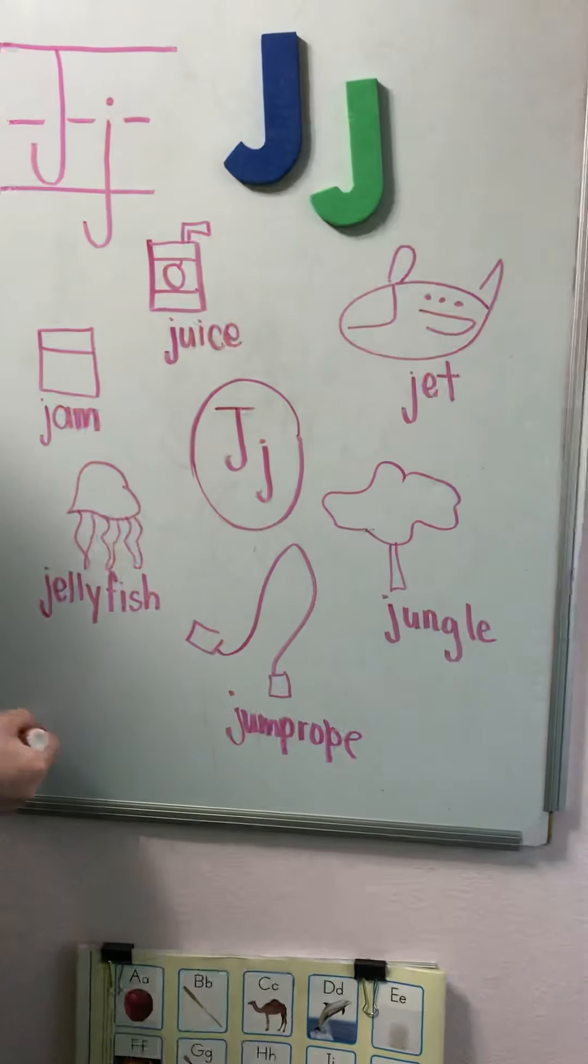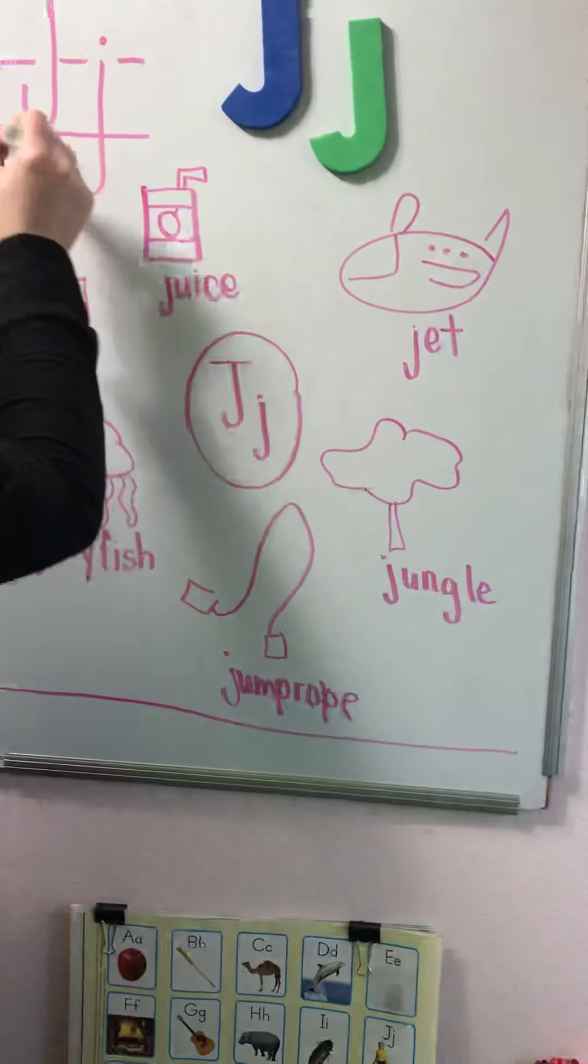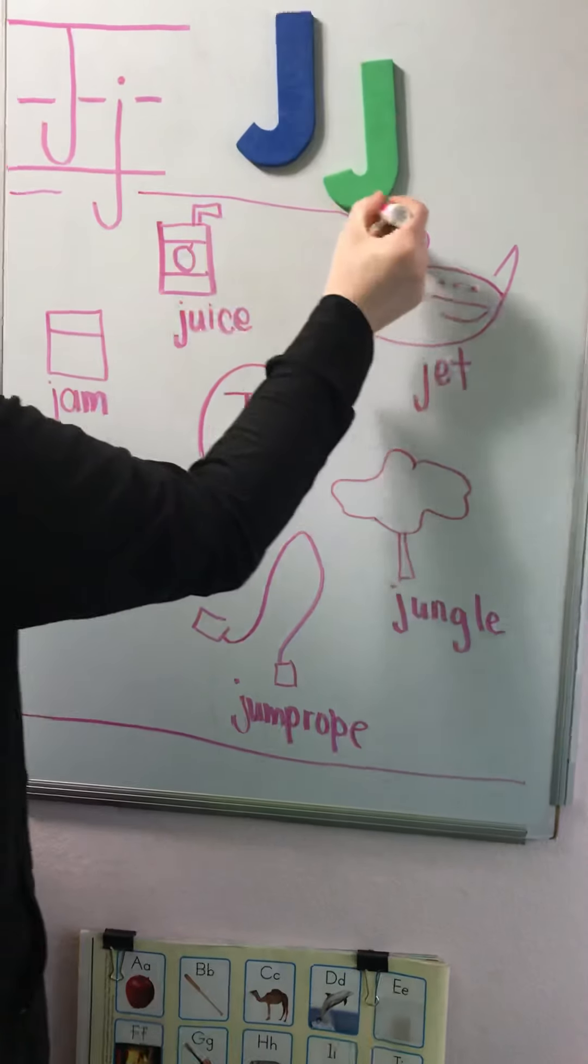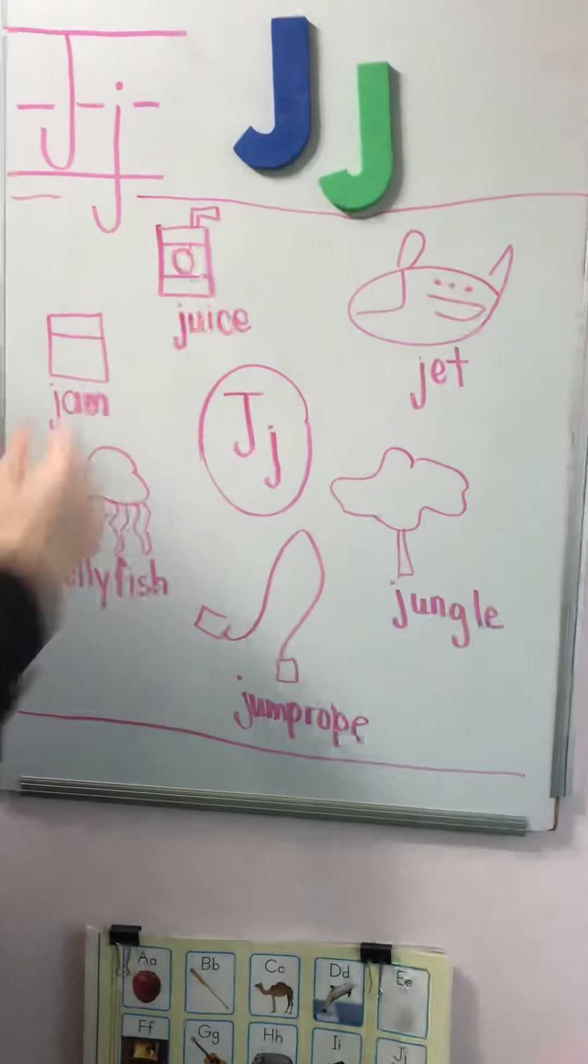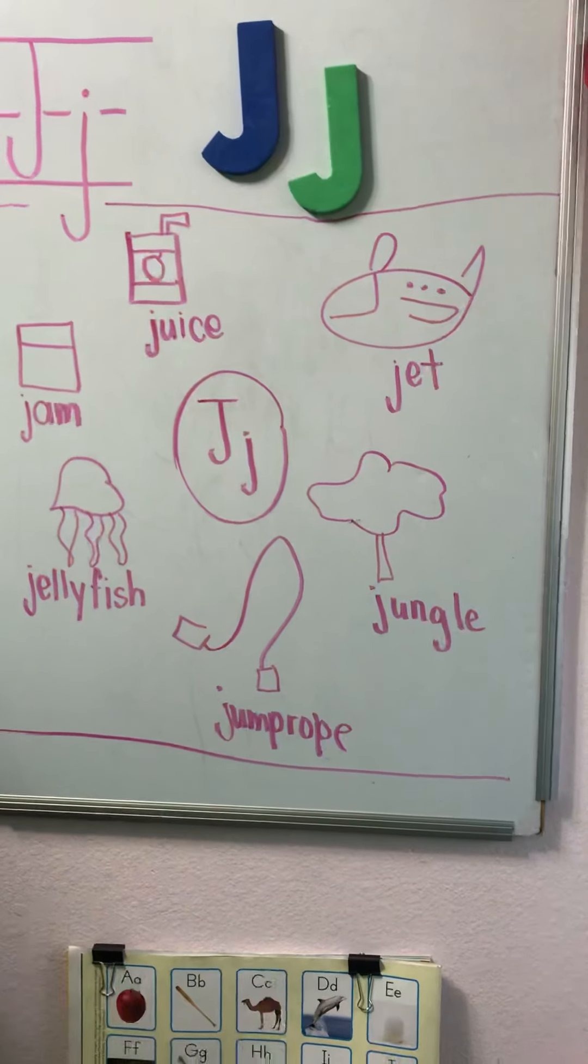These are things that begin with the letter J. Now you can take out your circle map and write things that begin with J.